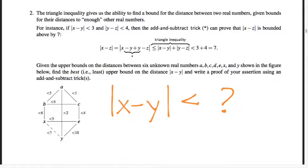And there may be a whole bunch of different ways to get these bounds. Try to find the best one. Try to find the smallest possible upper bound on the distance from x to y using the information shown in this chart and using the add and subtract trick that we talked about from today.